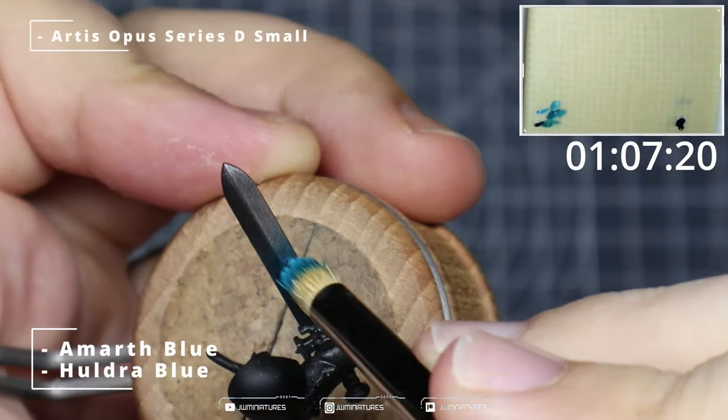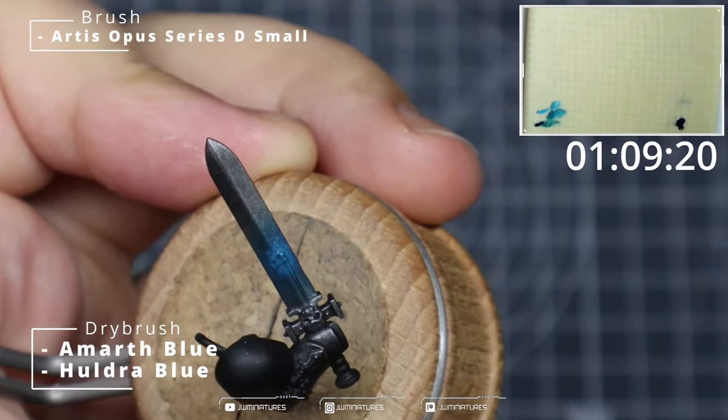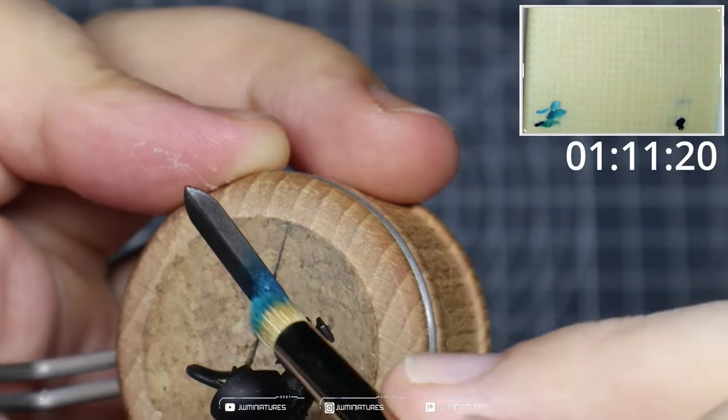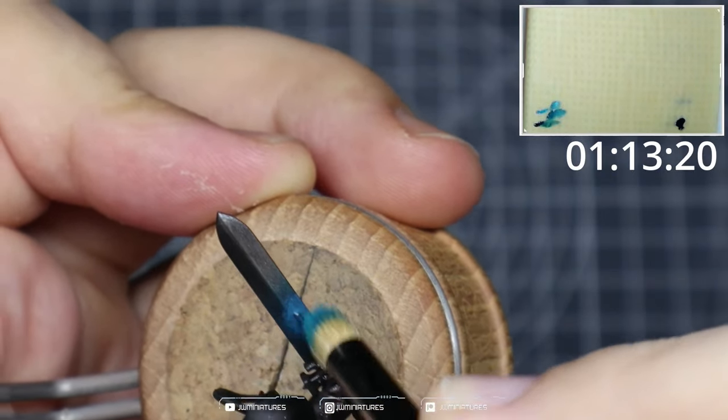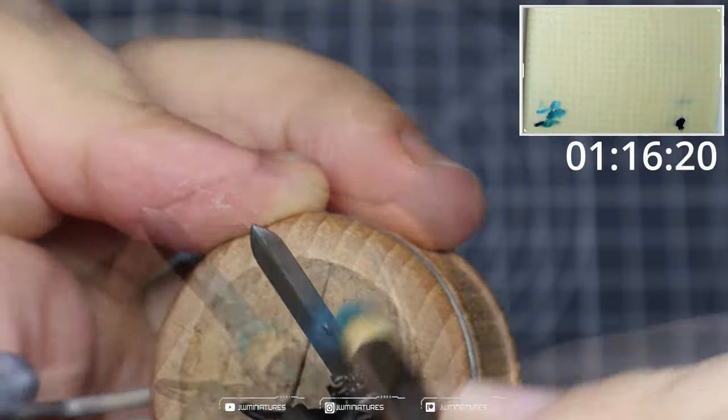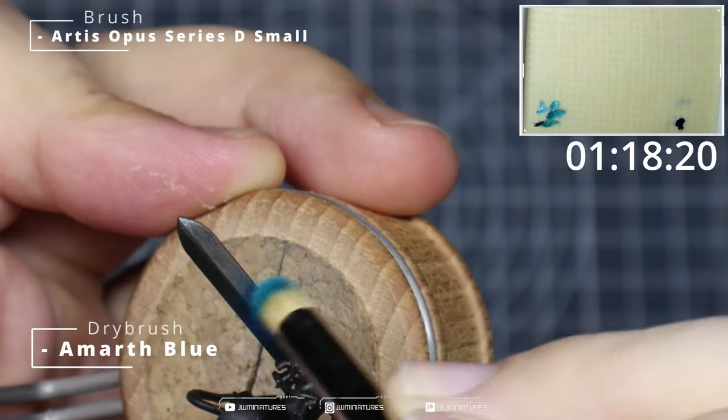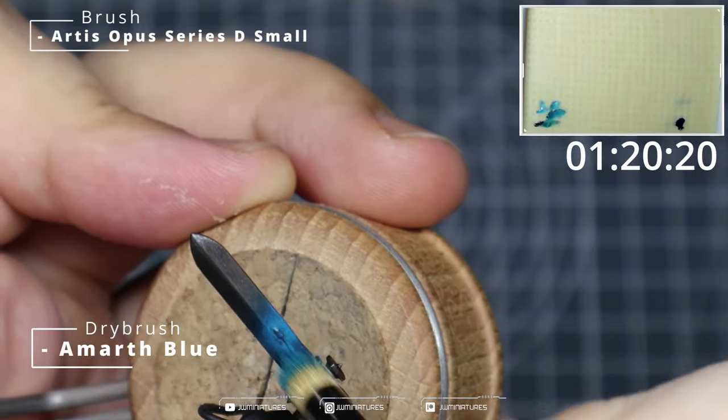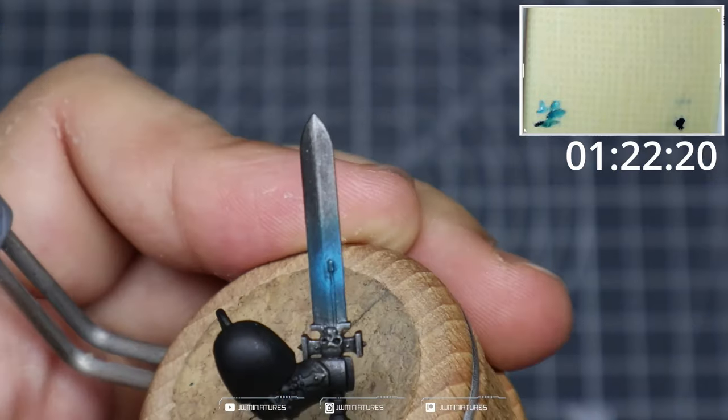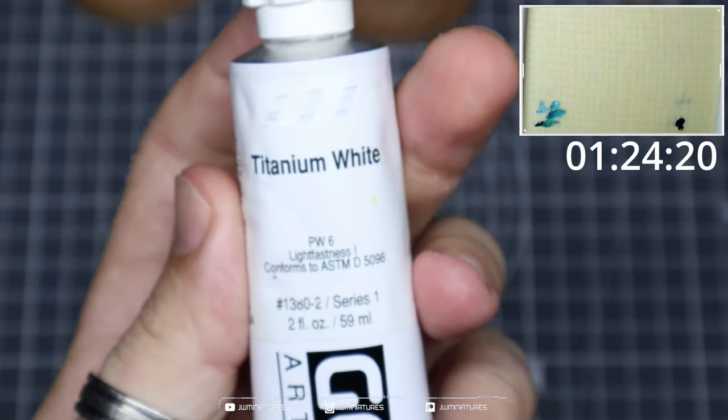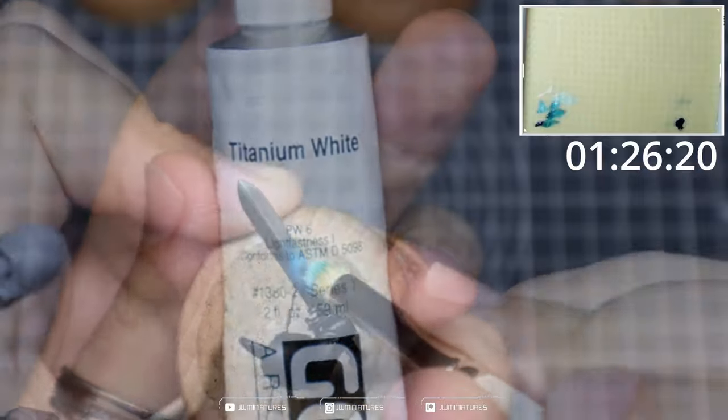Now we're taking some Ahriman Blue mixed with our Huldra Blue and we're going to almost stipple some of this on. You can do multiple things with your dry brushes - you can stipple with them and you can dry brush. So we're going to stipple in the focused point of the color on the tip of the rod and then create those soft circular patterns to ease out the transition.